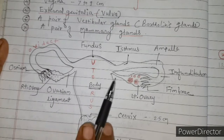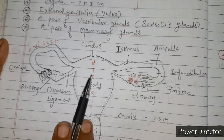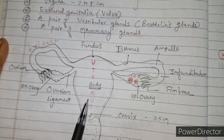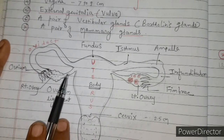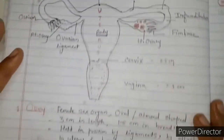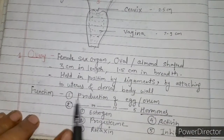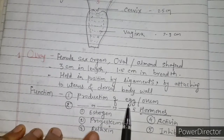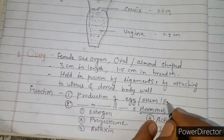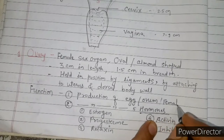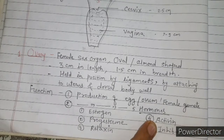With the help of the ovarian ligament, the ovaries are connected to the uterus. The main function of the ovary is the production of an egg or ovum, which is the female gamete — just like the sperm, which is the male gamete studied in the last period.